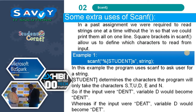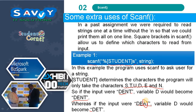Sequence brackets in scanf allow us to define which characters to read from input. For example, scanf("%[student]s") means the program will only accept characters found in the string 'student'. So if the input were 'DENT', variable D would become 'DENT'; whereas if the input were 'DEAT', variable D would become 'DET' because 'A' is not in 'student' and is ignored.